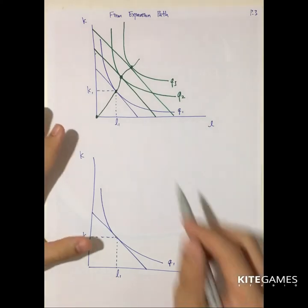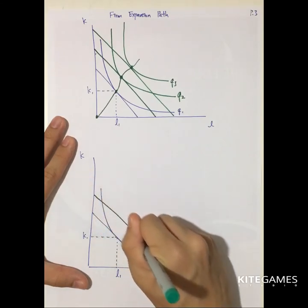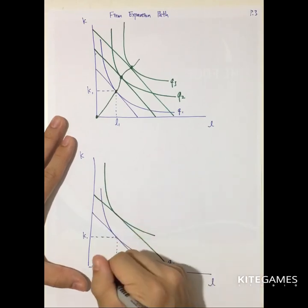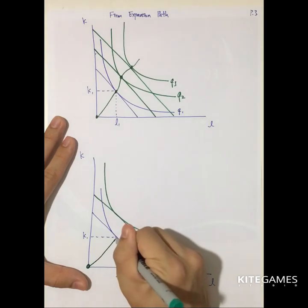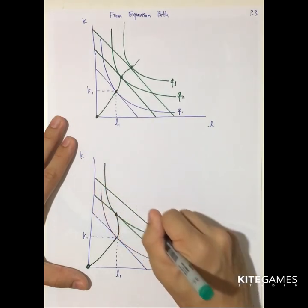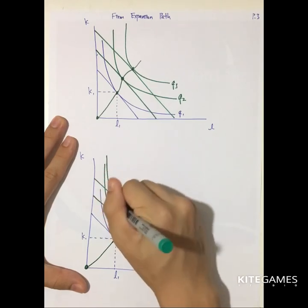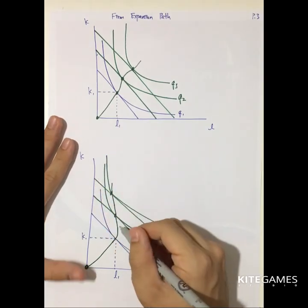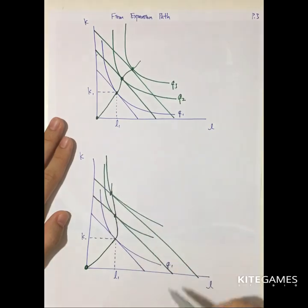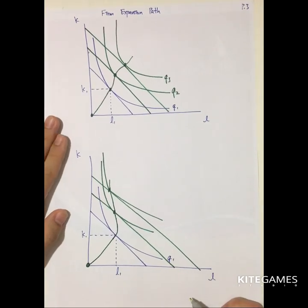The expansion path may not go in just one direction. In another case, the firm may first increase both labor and capital, then reduce the use of labor at the next stage, and further reduce labor at the third stage. This is typical in technology firms that use AI to replace labor. In this case, labor is the inferior input — another possible expansion path.